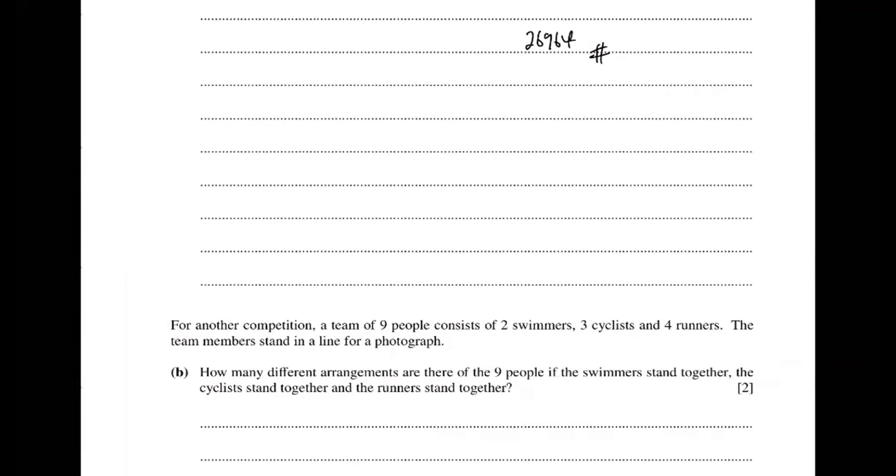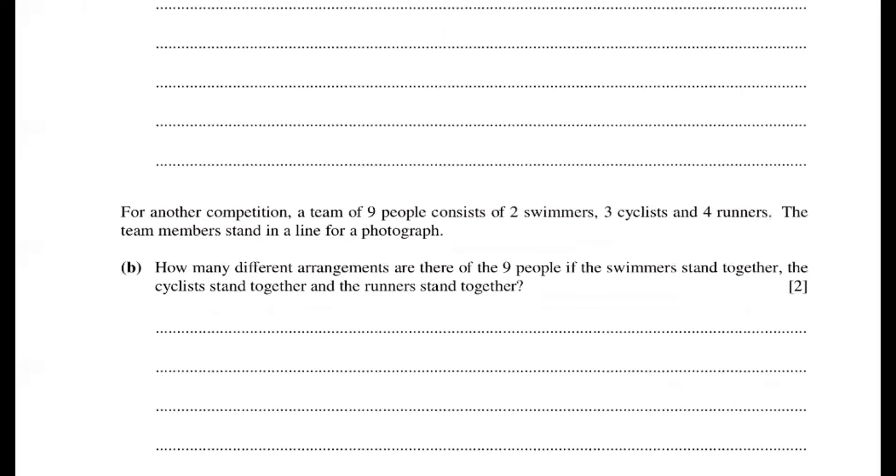Next one is 2 swimmers, 3 cyclists and 4 runners. Different arrangement that stand together. Cyclists stand together, runners stand together. It's a permutation question. So swimmer is together, cyclists is together, runner was also together. So how do we rearrange it? Swimmer, remember this is not same words, different people, different swimmers. That's why I need to arrange them. 2 factorial, 3 factorial, 4 factorial.